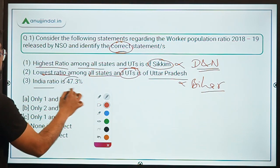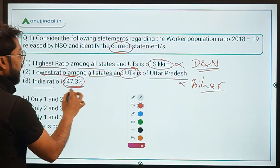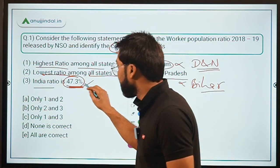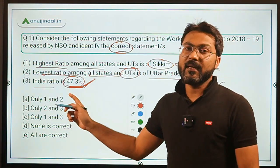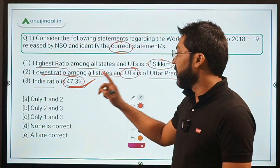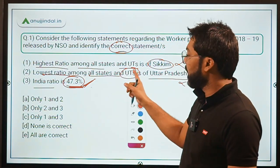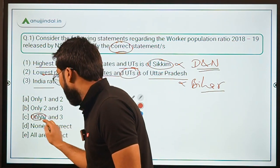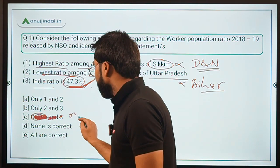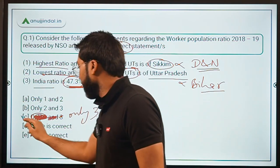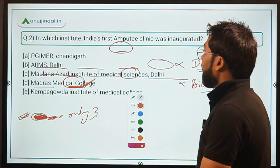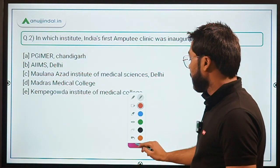India's overall ratio is 47.3% — yes, this is absolutely correct. So only statement three is correct, and the correct answer will be option C, which is 'only 3'. Now let's move on to question number 2.